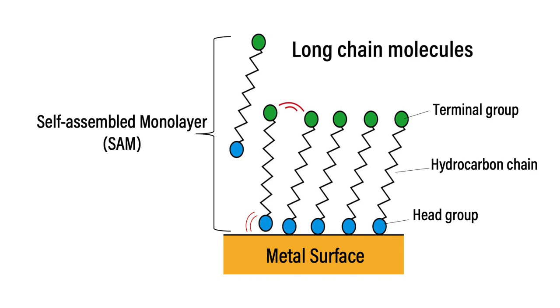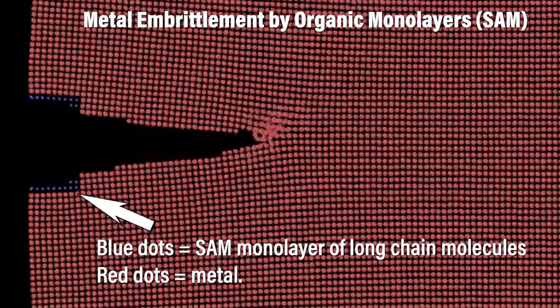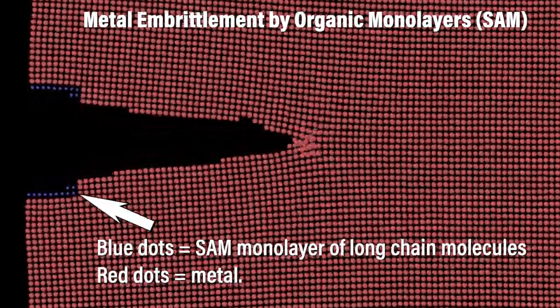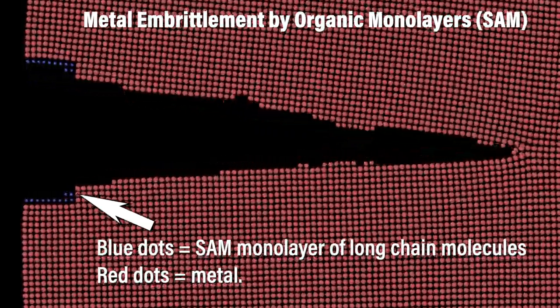Long chain organic molecules, when they are on a metal, they induce a tensile surface stress. And when you have this tensile surface stress, that results in embrittlement. The short chain organic molecules don't induce a surface stress.